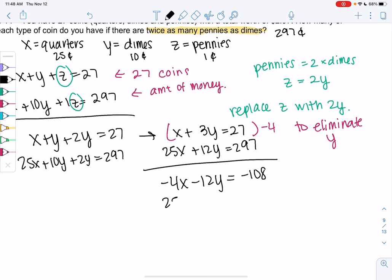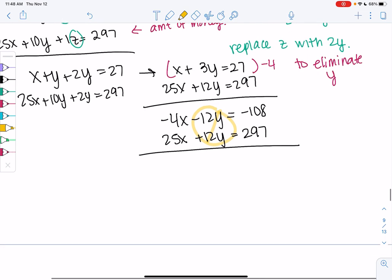And the Y's should eliminate when you add them together. I get 21X is 189. So we'll divide by 21, and I get X is 9 for 9 quarters.